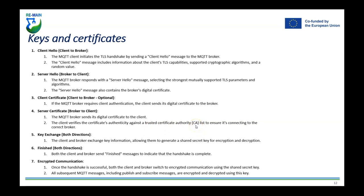The MQTT broker sends its digital certificate to the client, and the client can verify the certificate's authenticity against a trusted certificate authority list to ensure it's connecting to the correct broker. The client and broker then exchange key information, allowing them to generate a shared secret key for encryption and decryption. Both the client and broker send a 'Finished' message to indicate the handshake is complete, after which all MQTT messages including publish and subscribe are encrypted using this shared key.